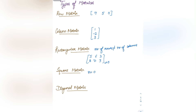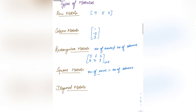Next is the square matrix — a matrix in which the number of rows and the number of columns are equal. For example, a matrix with elements [5, 6, 2 / 8, 7, 3 / 0, 9, 5] has 3 rows and 3 columns. Since the number of rows and columns are equal, this is known as a square matrix.